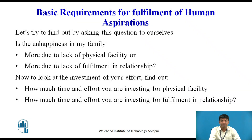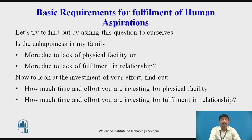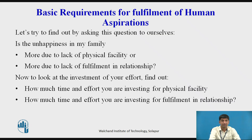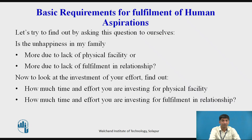For human beings, physical facility is necessary, but relationship is also necessary. By saying this we can understand the difference between animals and human beings. Physical facility is necessary for animals as well as for human beings, but for animals it is necessary as well as adequate. For human beings, that is not the case — physical facility alone is not going to suffice. For example, when an animal like a cow lacks physical facility it becomes uncomfortable, but when it gets a stomach full of grass, it becomes comfortable.